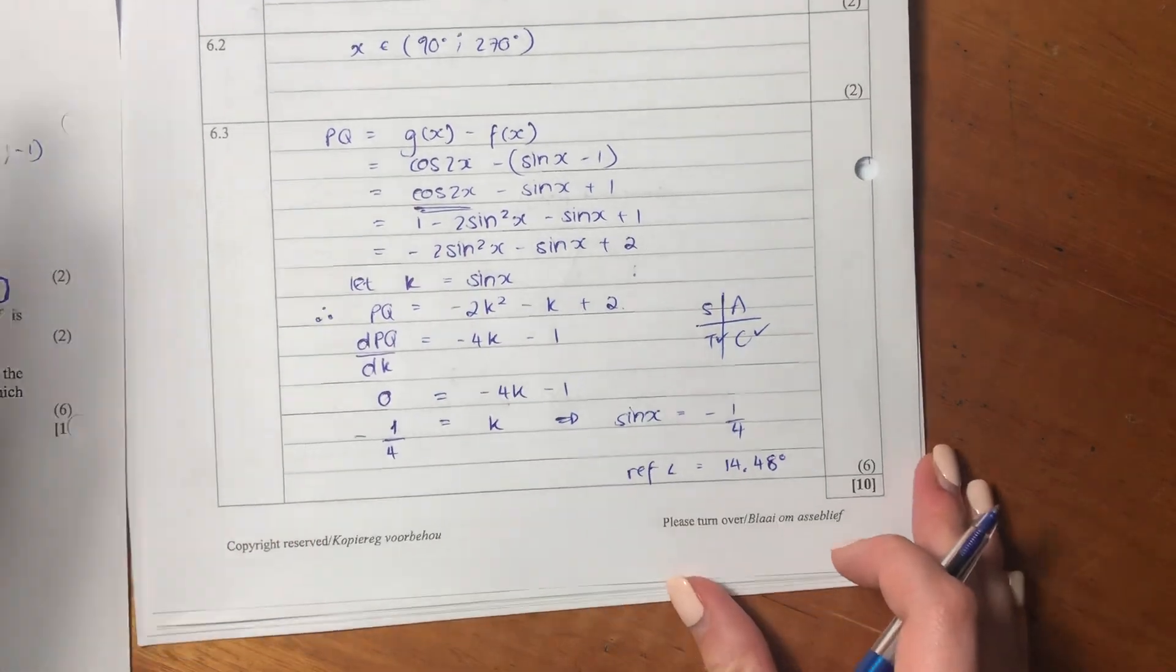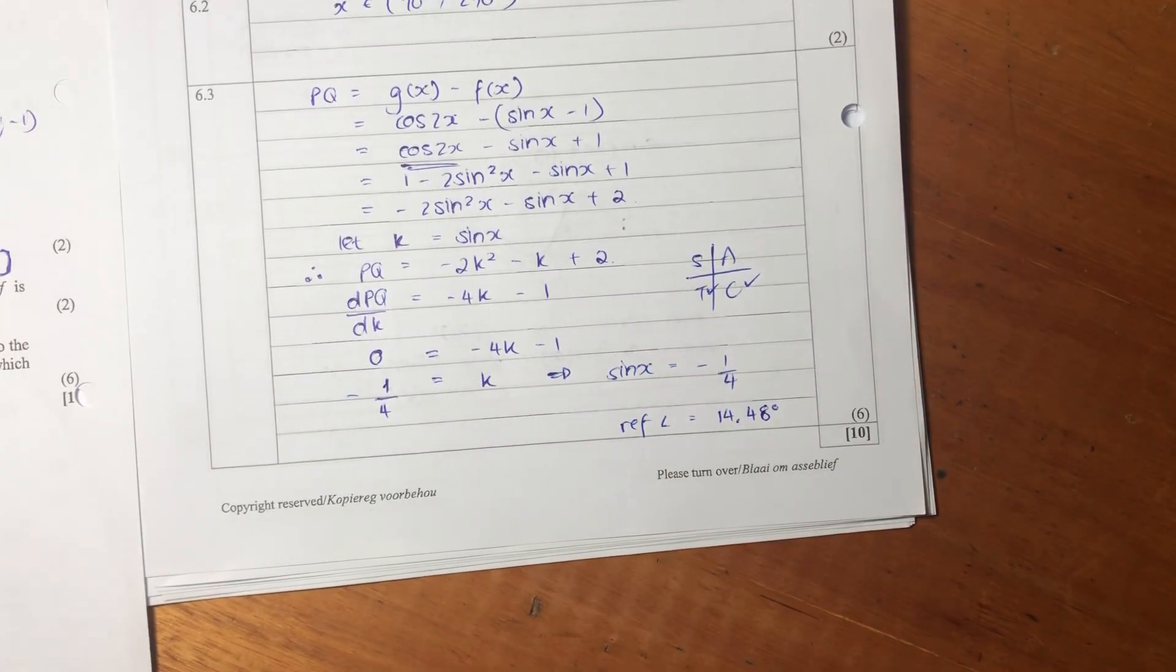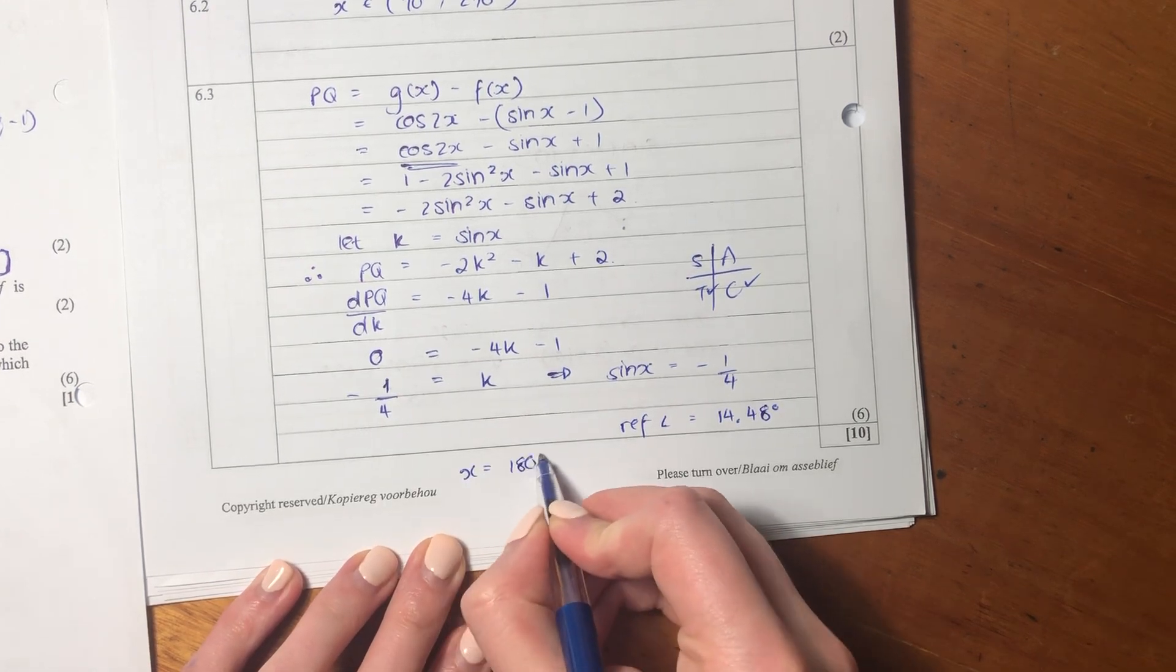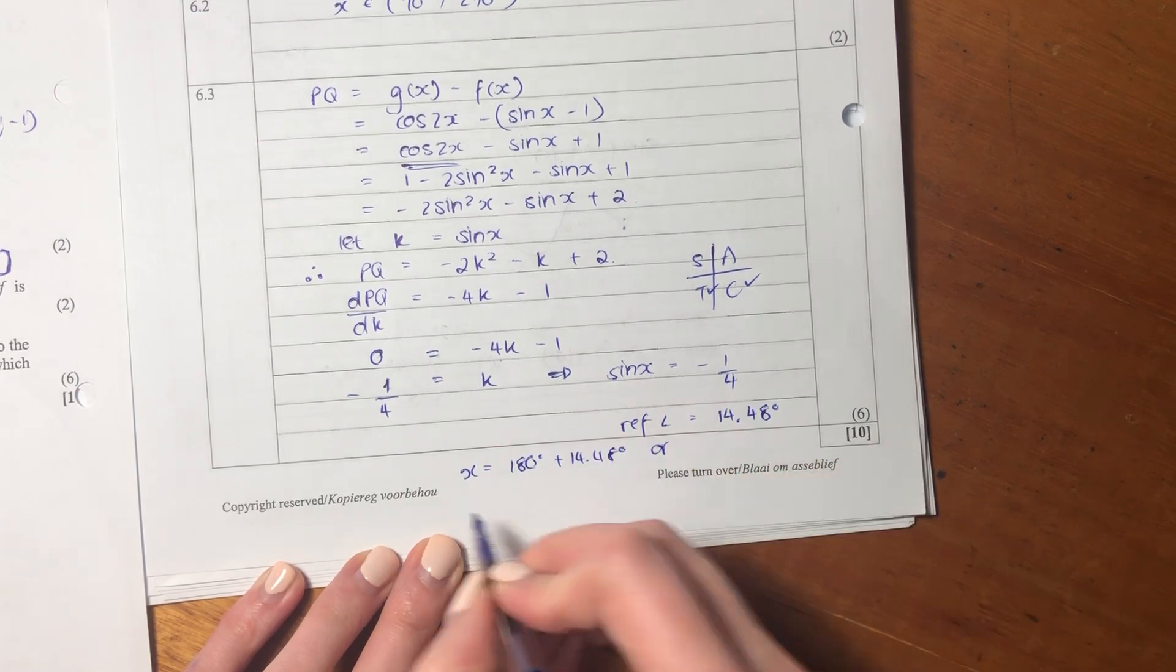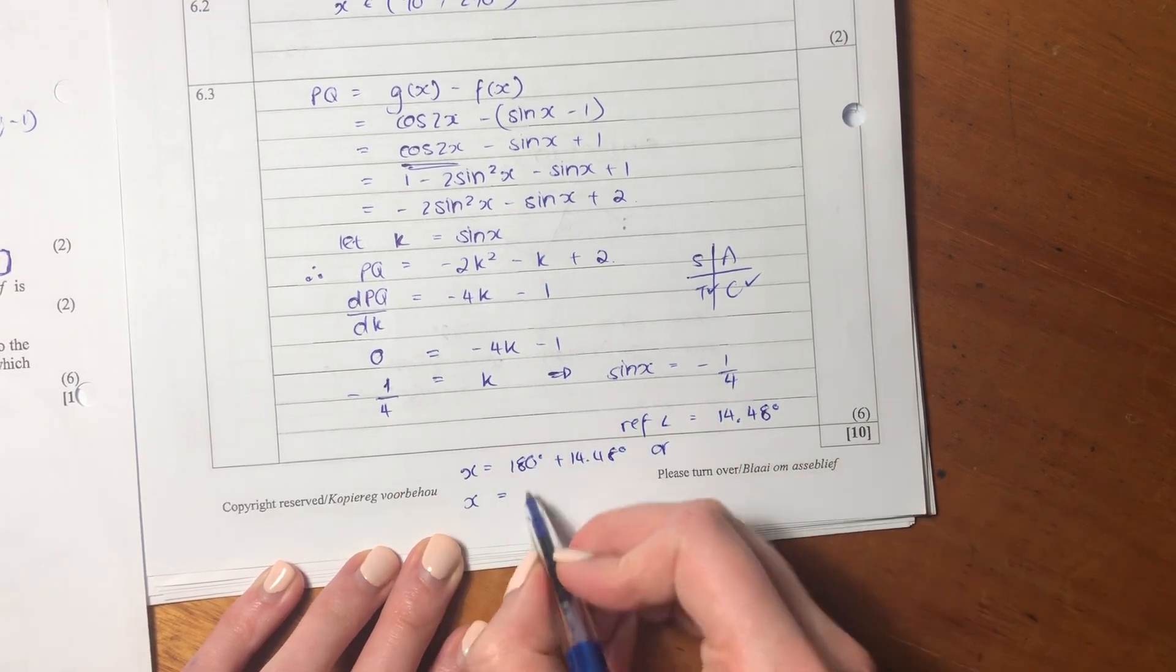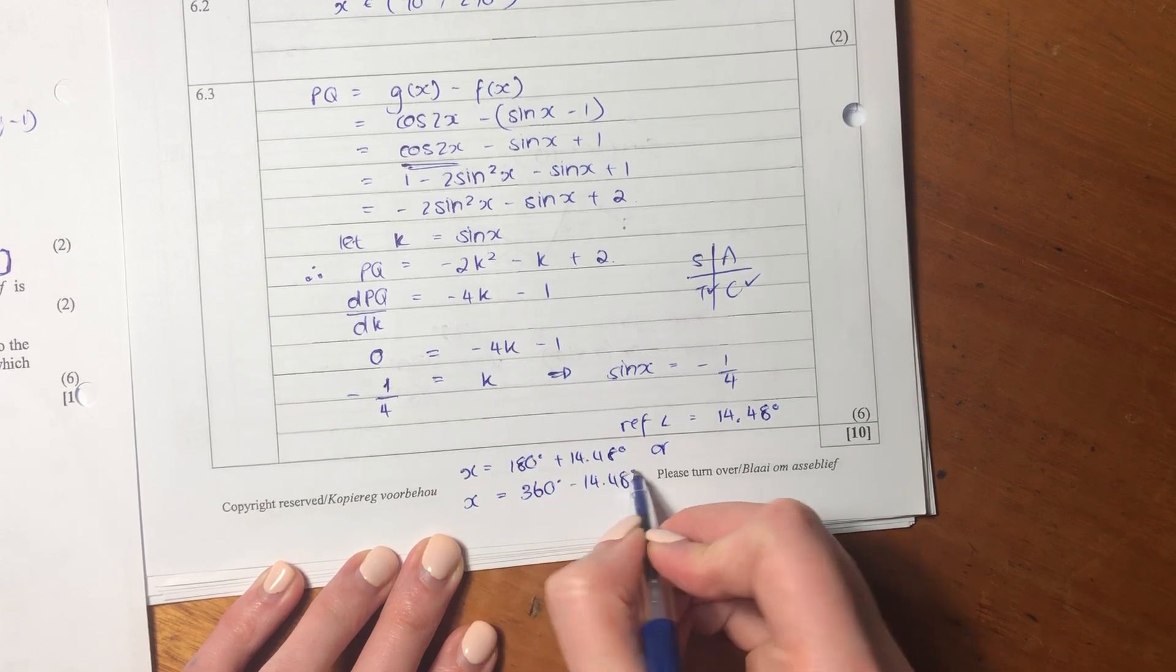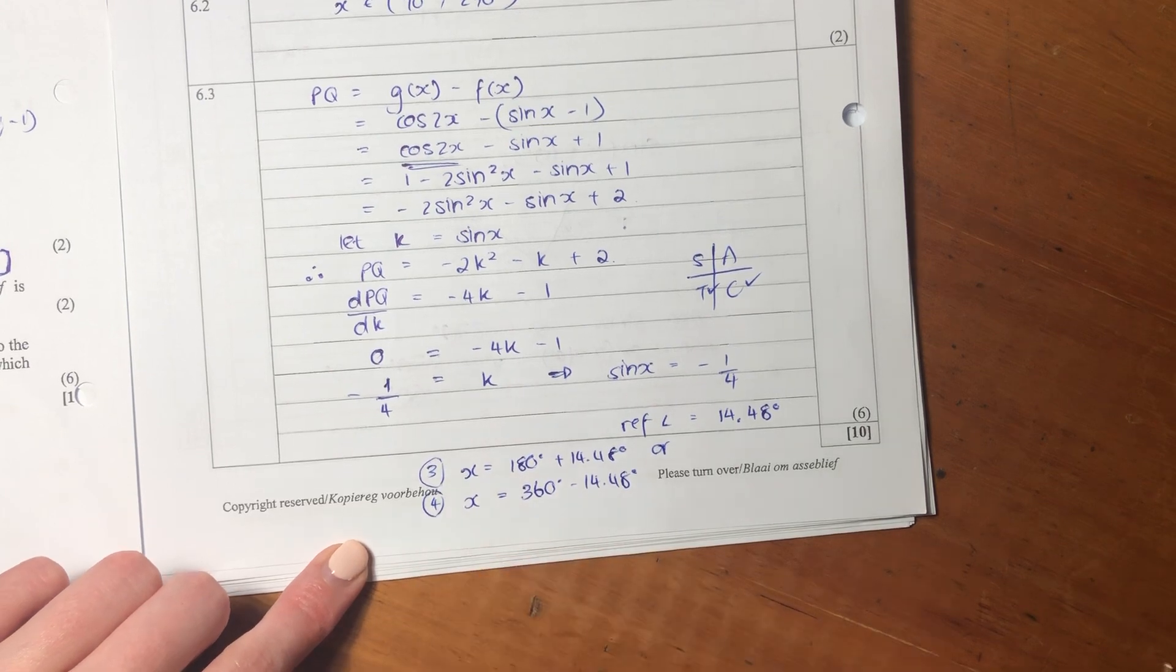But we're not done yet. We have to get it in the third and fourth quadrant. So x is going to equal 180 plus 14.48 or x is going to equal 360 minus 14.48. Because that's the third quadrant and that's the fourth quadrant.